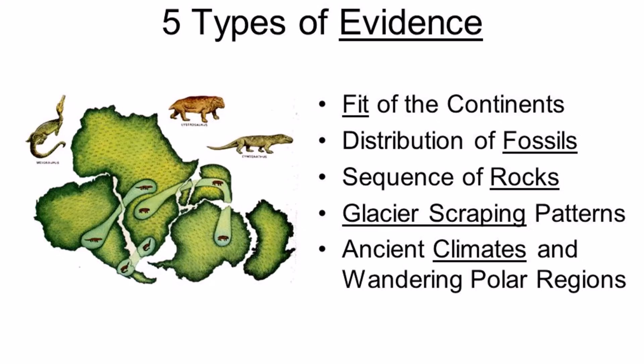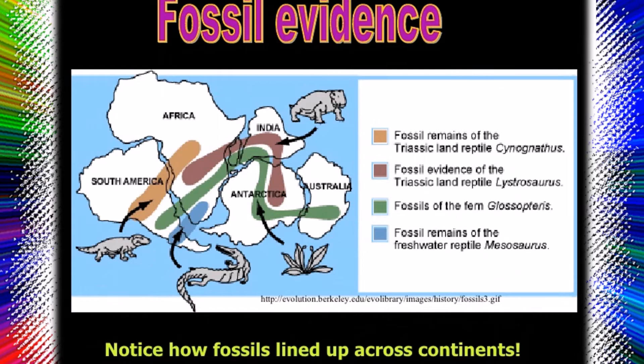Iron-rich volcanic rocks, such as basalt, contain minerals that are good recorders of remnant magnetism, and some sediments also align their magnetic particles with Earth's field at the time of deposition. These minerals behave like fossil compasses that indicate, like any magnet suspended in Earth's field, the direction to the magnetic pole and the latitude of their origin at the time the minerals were crystallized or deposited.